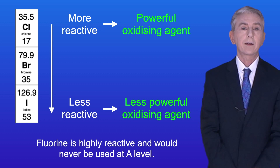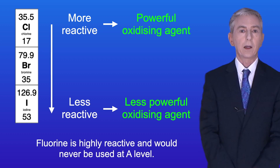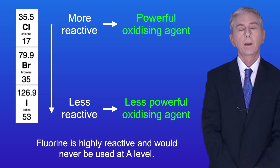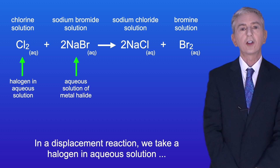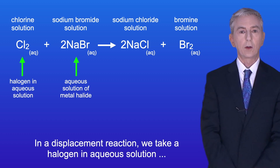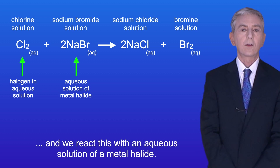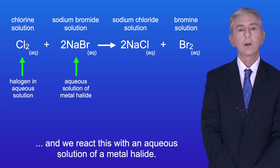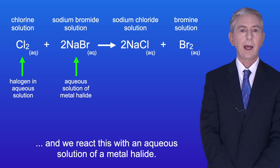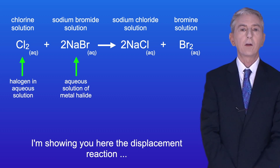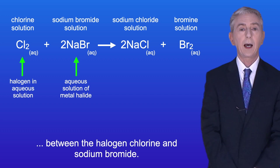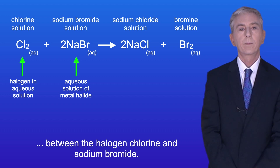Fluorine is highly reactive and would never be used at A-level. In a displacement reaction we take a halogen in aqueous solution and we react this with an aqueous solution of a metal halide. I'm showing you here the displacement reaction between the halogen chlorine and sodium bromide.